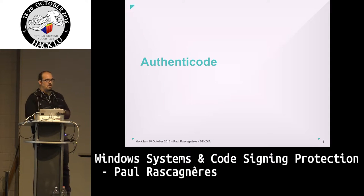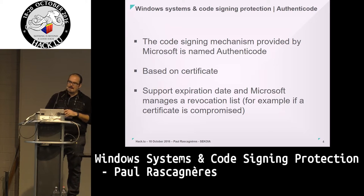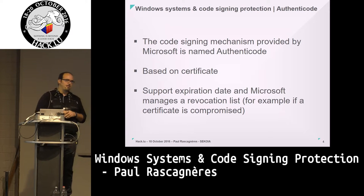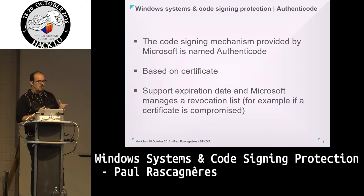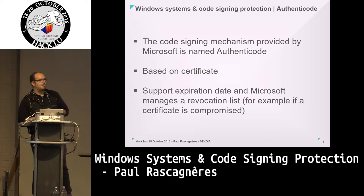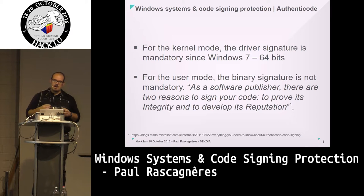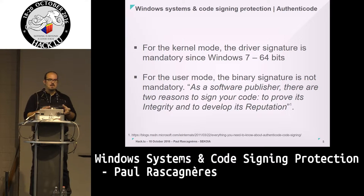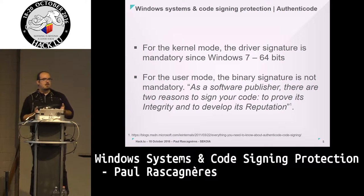This talk will be mainly focused on Authenticode. I'll shortly explain what it is — I think everybody here knows it so I won't take a lot of time on it. It's the code signing mechanism developed by Microsoft on Windows systems. It's based on certificates, each with an expiration date, and a regular revocation list system so if a certificate provider is compromised you can revoke certificates signed by it.